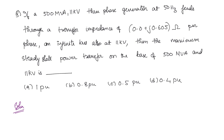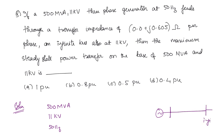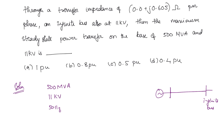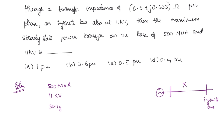First, write down the given information. The ratings are 500 MVA and 11 kV, frequency 50 Hz. The generator feeds an infinite bus with transfer reactance X = j0.605 ohms per phase. The infinite bus is also at 11 kV. We need the maximum steady-state power transfer on the base of 500 MVA and 11 kV.